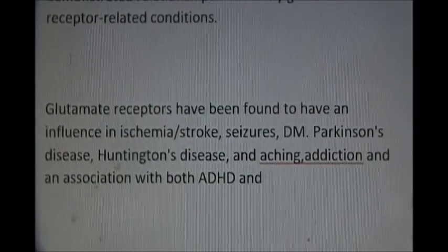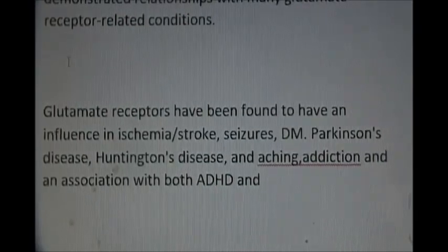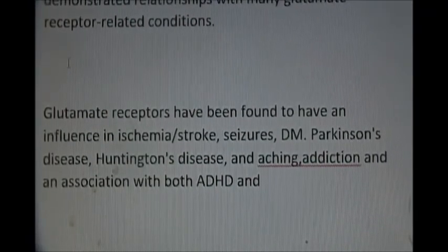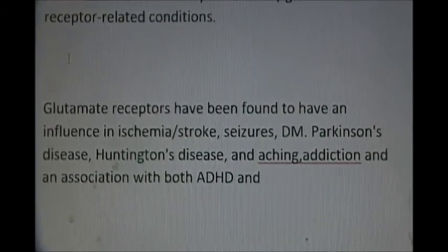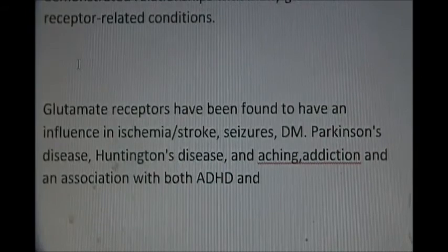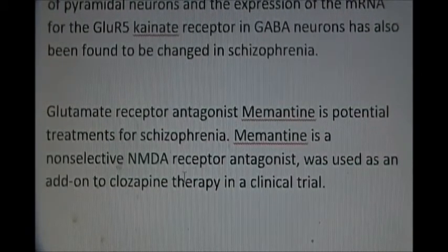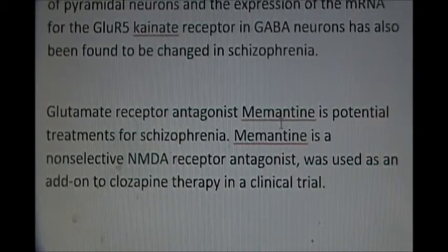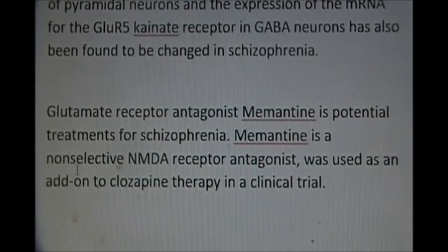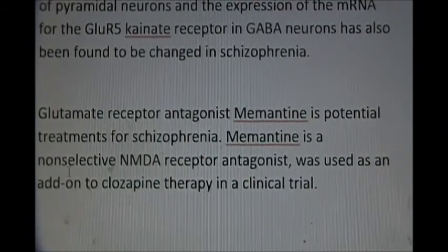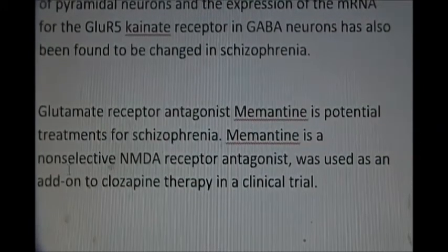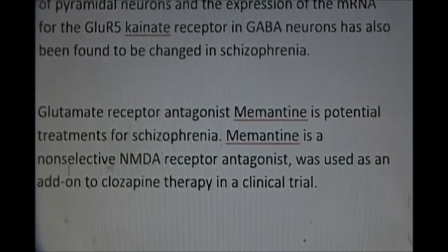Glutamate receptors have been found to influence ischemia, stroke, diabetes, Parkinson's disease, Huntington's disease, and pain conditions. They may also be involved in schizophrenia, and the glutamate receptor antagonist memantine is a potential treatment for schizophrenia. Memantine is a non-selective NMDA receptor antagonist.